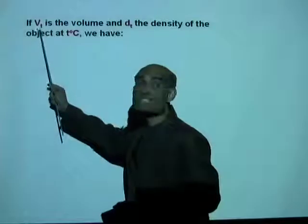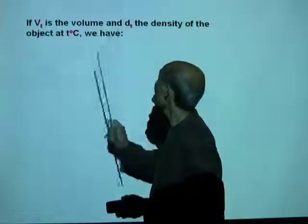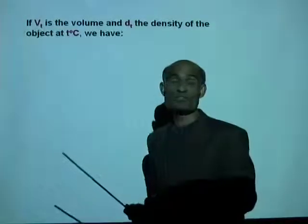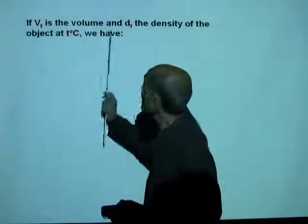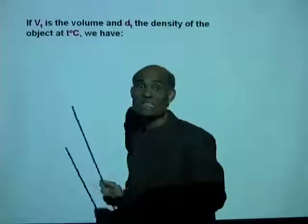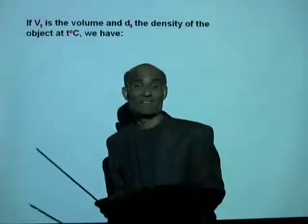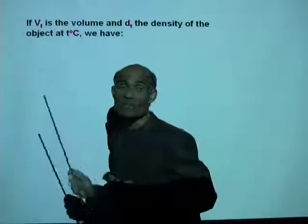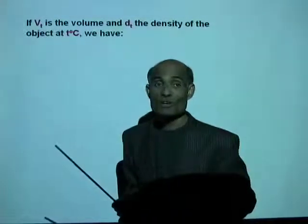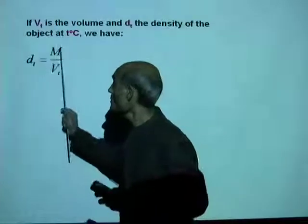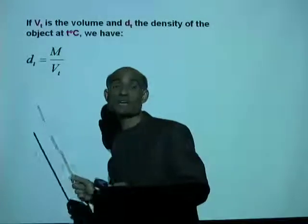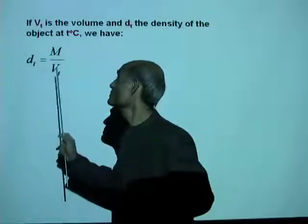Now, if Vₜ is the volume and Dₜ the density at T degrees Celsius, then what will an equation for Dₜ look like? Dₜ will be mass divided by Vₜ. Will the mass change? No, it will not. The mass is the same. But the volume changes from V₀ to Vₜ.